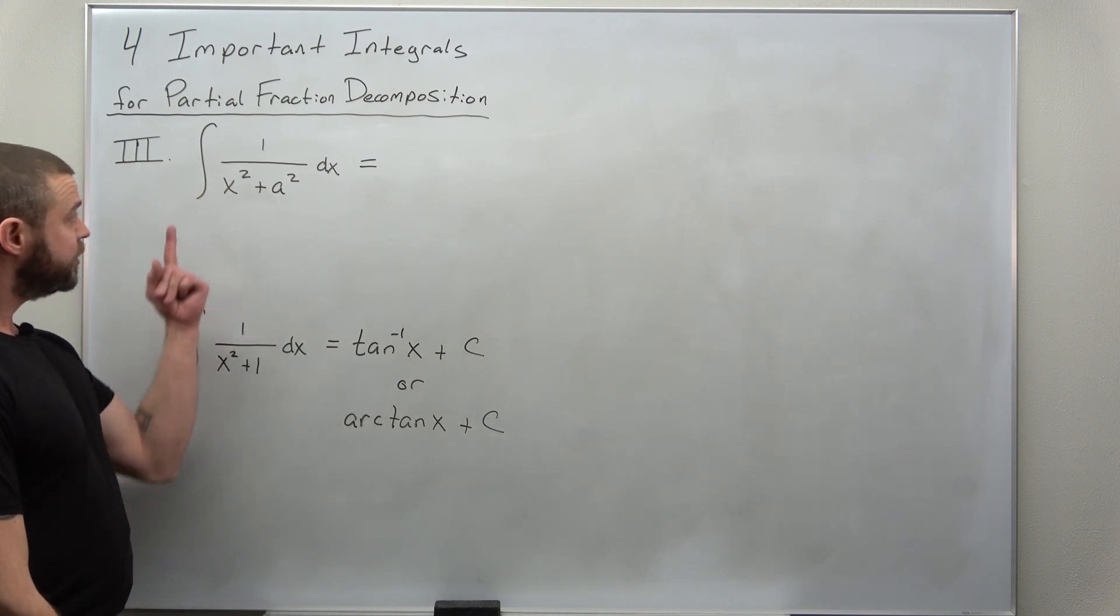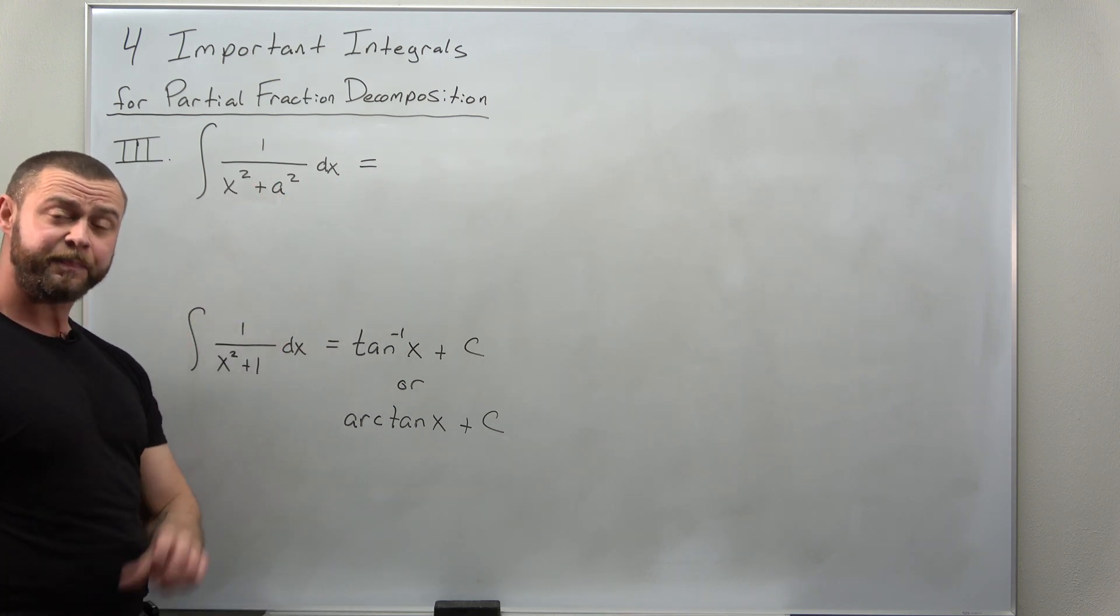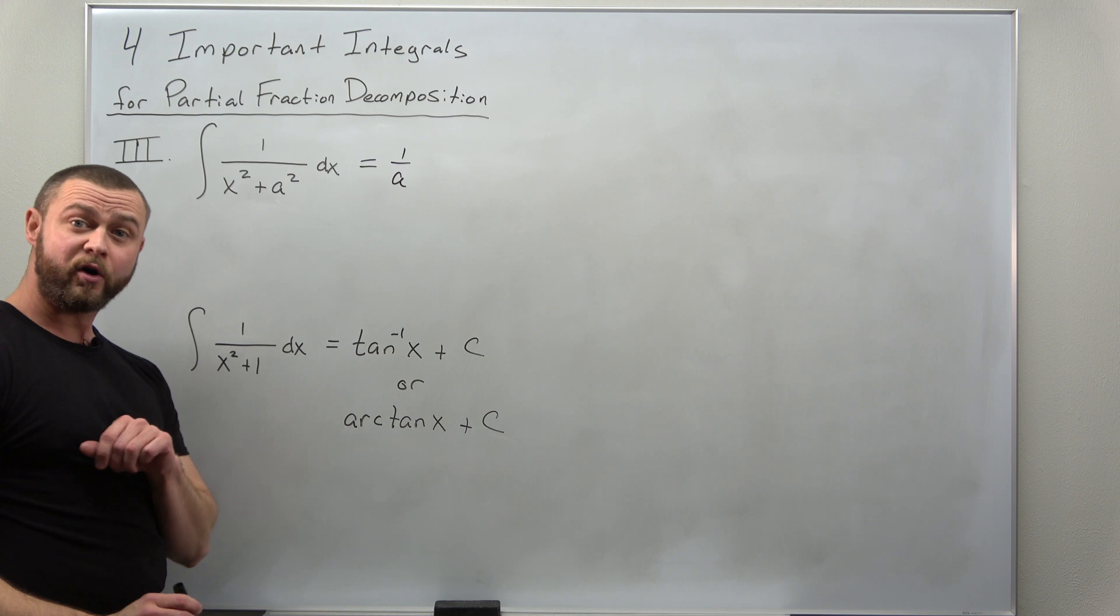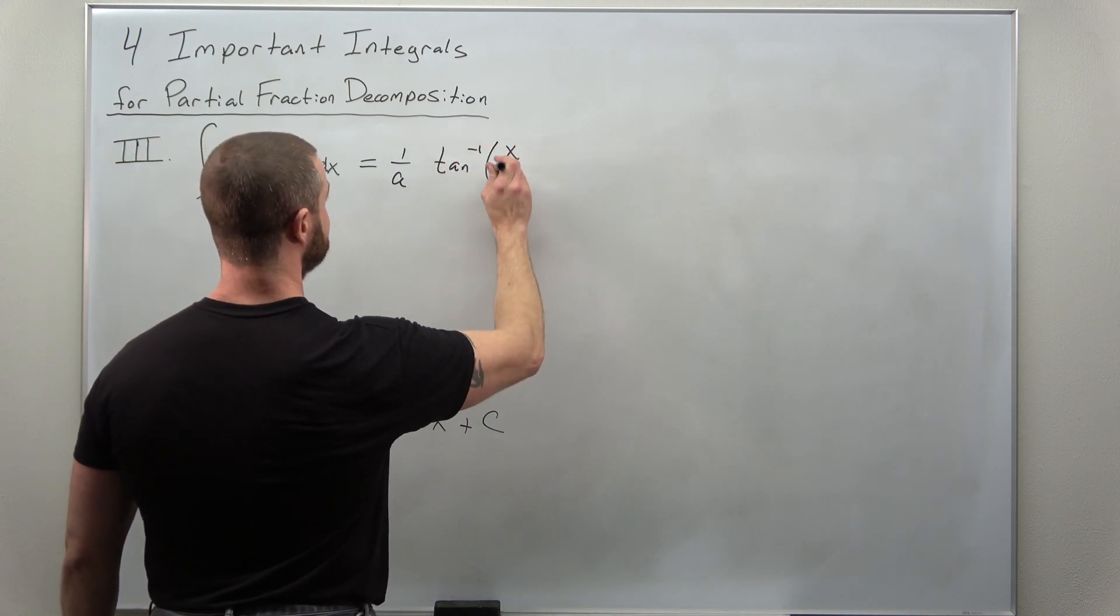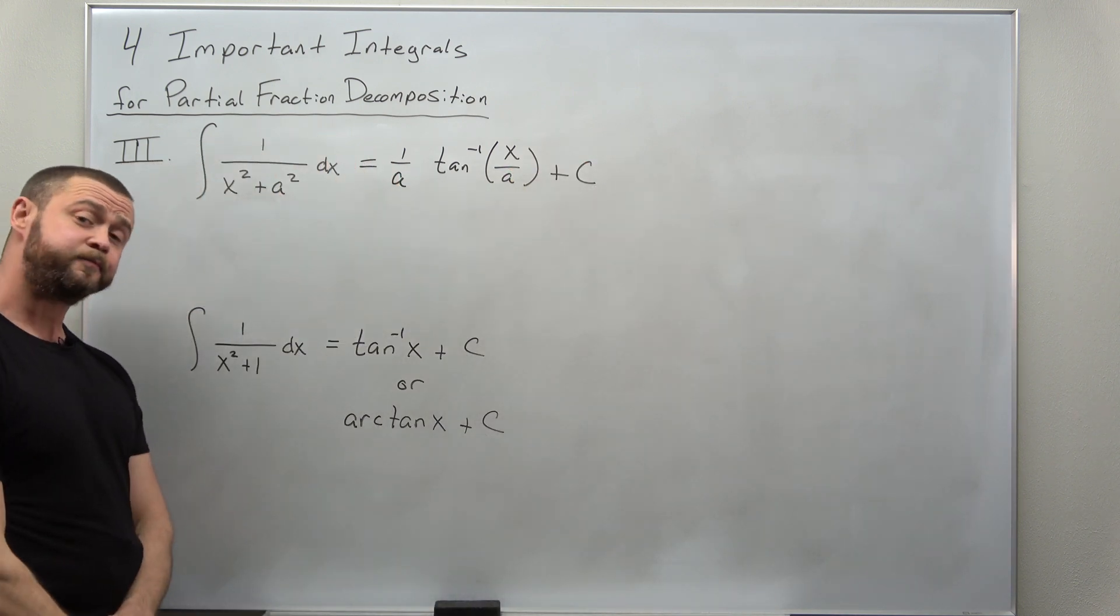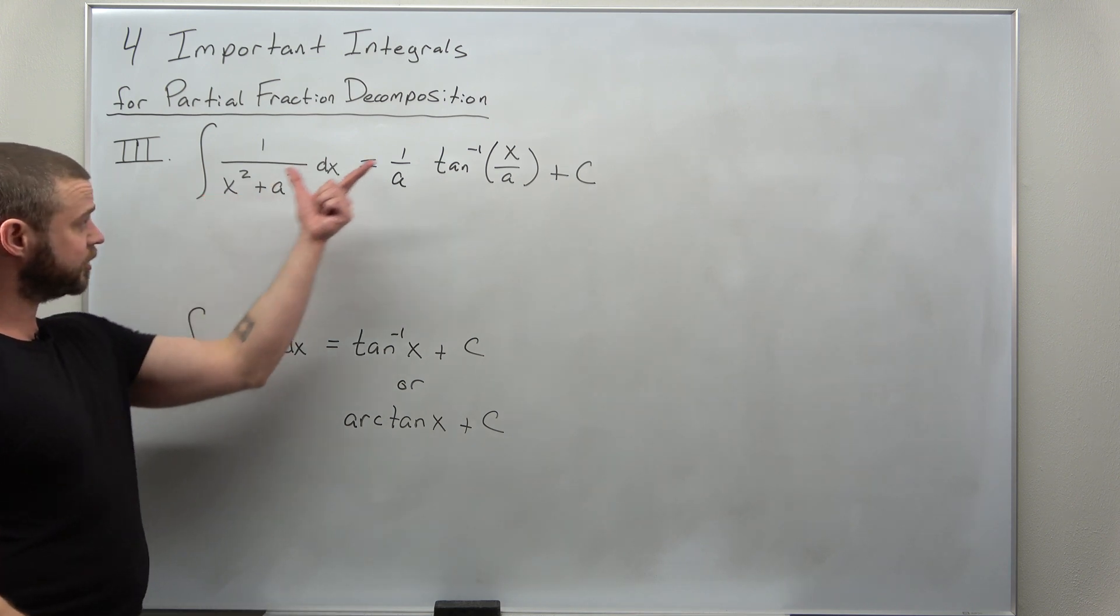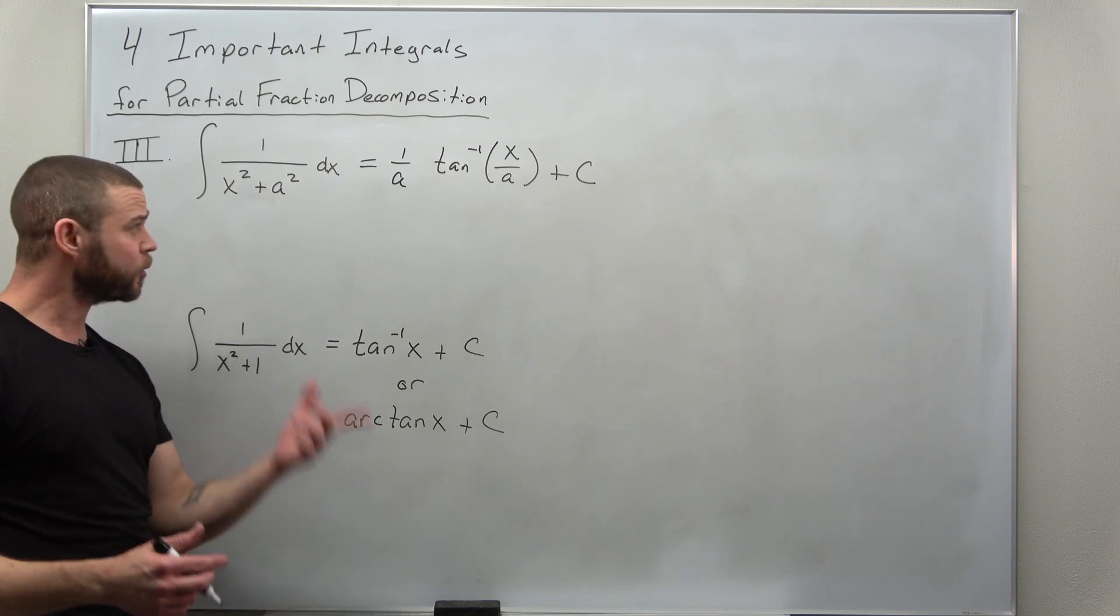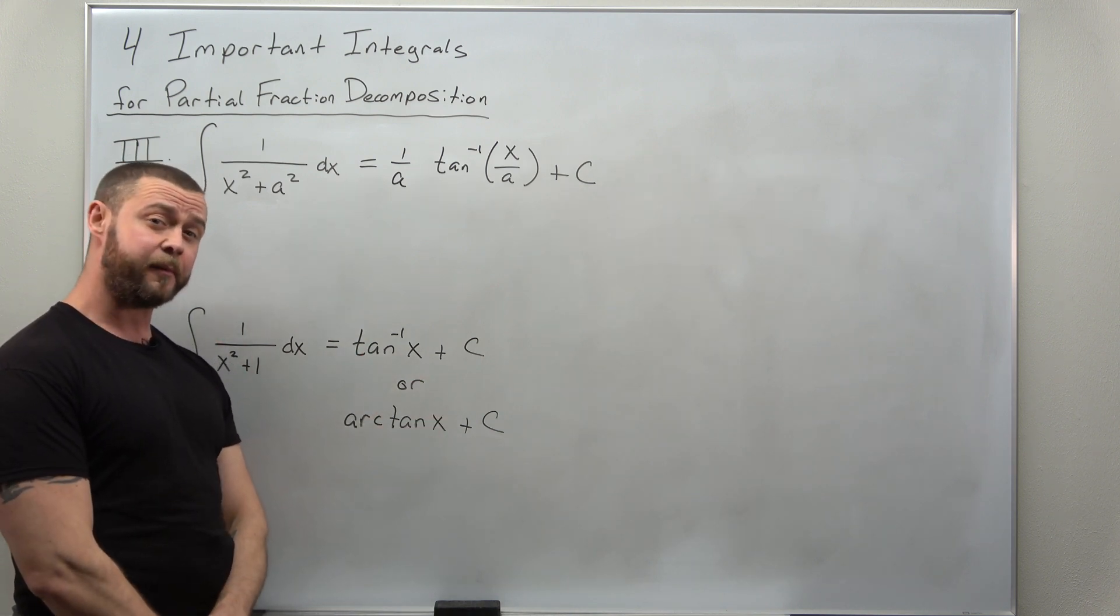The formula that you need to know comes out to a 1 over a factor times inverse tangent of x over a. Now, there is a u substitution involved to go from this integral to that antiderivative, but you won't be expected to use that substitution or prove this formula. You just need to memorize it to make use of it for a partial fraction decomposition.